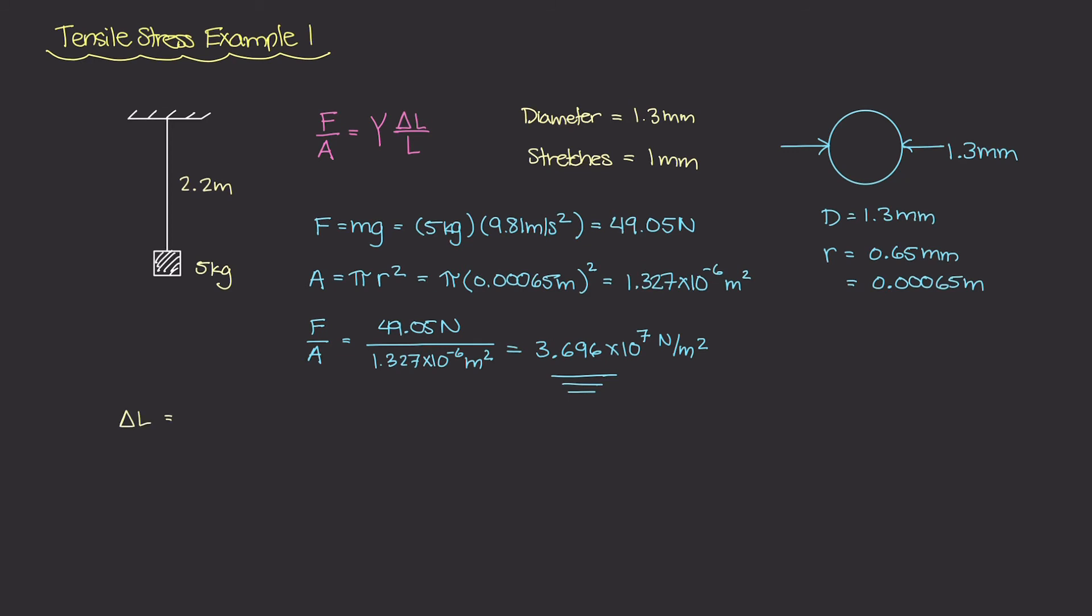So what is our ΔL? ΔL is how much this wire elongated when the mass was attached. So originally the length was 2.2 meters, but when we added this 5 kilogram mass to the wire, it stretched it by 1 millimeter. And the original length again was 2.2 meters.